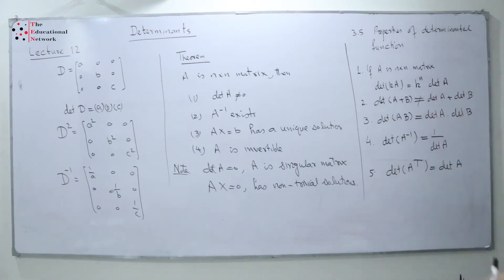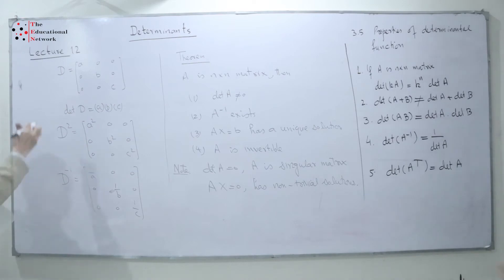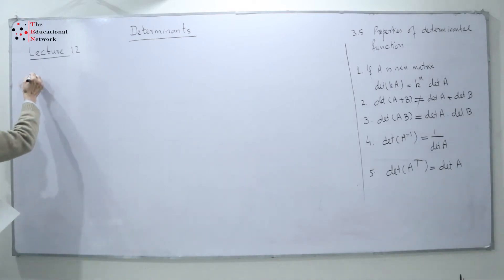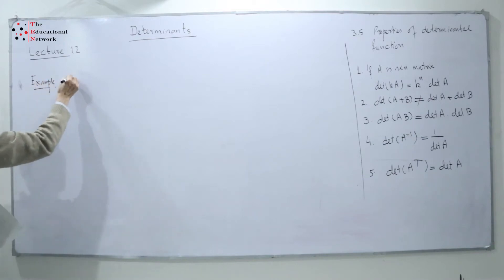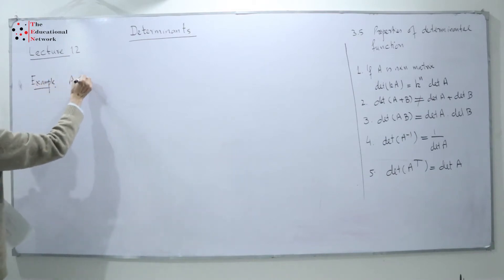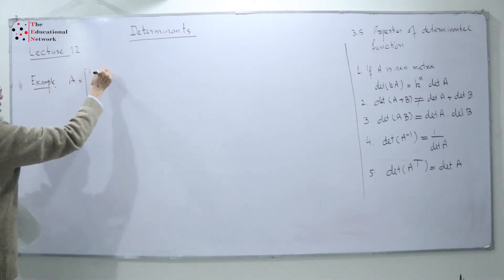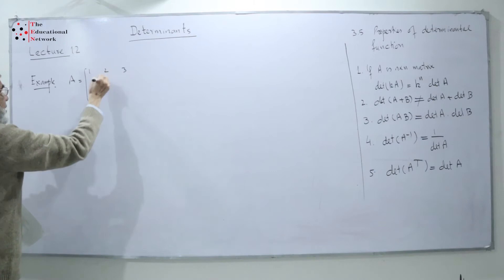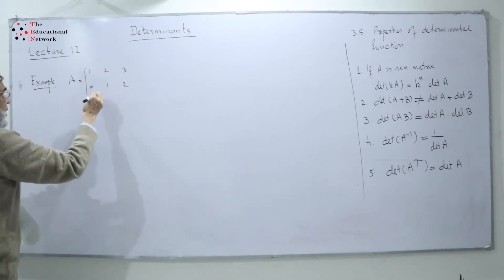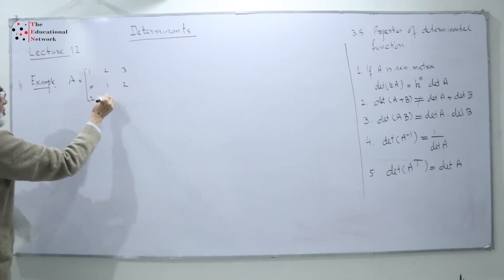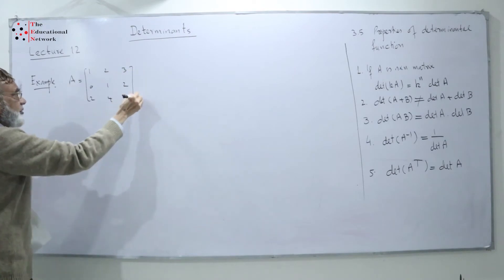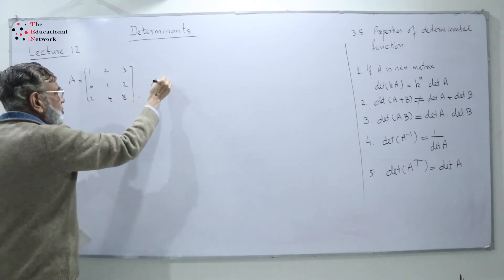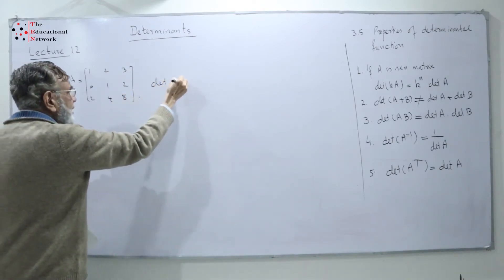I will show you this with the help of examples. For example 1, we take our standard matrix A equal to the 3 by 3 matrix with entries 1, 2, 3 in the first row; 0, 1, 2 in the second row; and 2, 4, 8 in the third row. I know the value of determinant of A is equal to 2 — we have already taken this one.